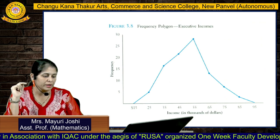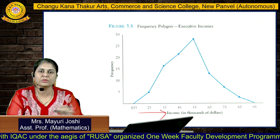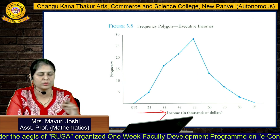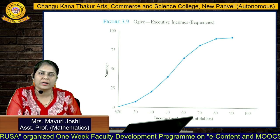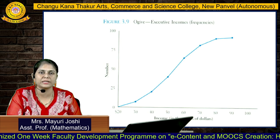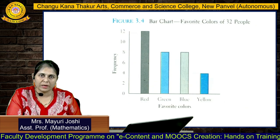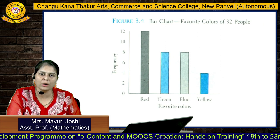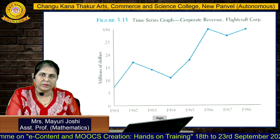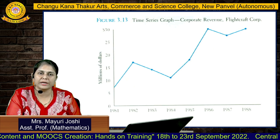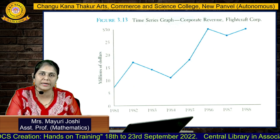A histogram has adjacent bars and is defined for continuous data. A frequency polygon has continuous values on the x-axis. The ogive curve is also continuous and is therefore called a curve. Then there is the pie chart. A bar chart is also called a line diagram. A time series graph is used when data is related with time.